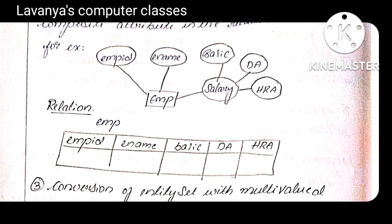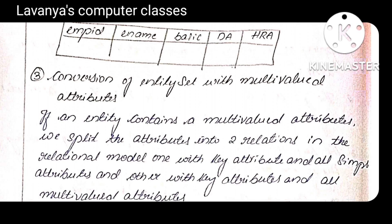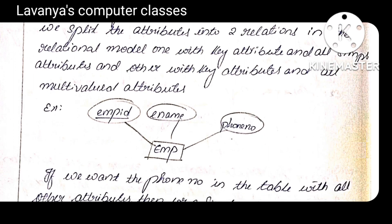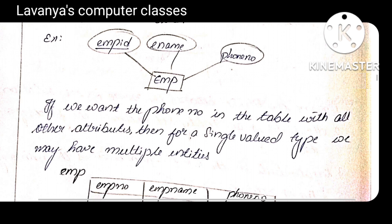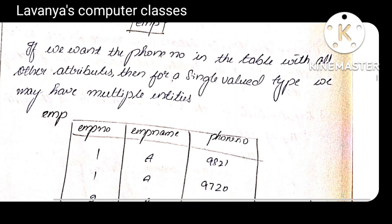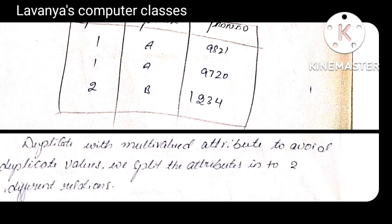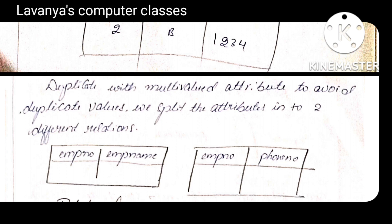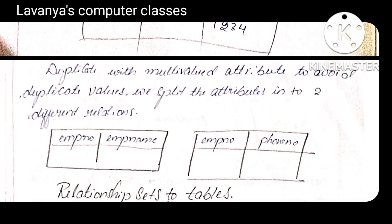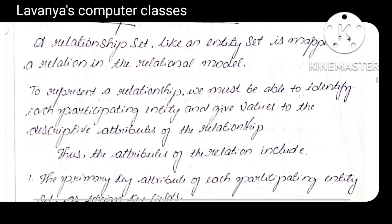This is an entity set with multi-valued attributes. For example, salary contains basic salary, HRA, LIC — in this case, don't take a subpart; take all as different individual fields. These are all examples of how to convert ER diagrams into tables — with derived attributes, multiple attributes. If any data is repeated, like phone number appearing multiple times, don't take it as multi-valued — instead, split it into two different tables.